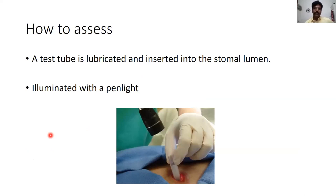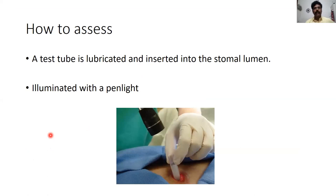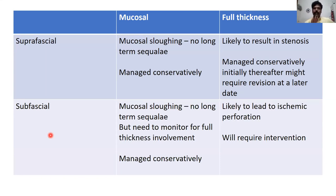This slide from the previous discussion shows how to assess ischemia: we use a test tube illuminated by a pen torch or ophthalmoscope to identify pink mucosa, then ascertain whether it is mucosal or muscular by means of a pin prick. The same table applies: mucosal ischemia is unlikely to have any long-term sequelae and is managed conservatively. Subfascial mucosal ischemia should be monitored sequentially. Full thickness ischemia below the fascia requires immediate intervention.